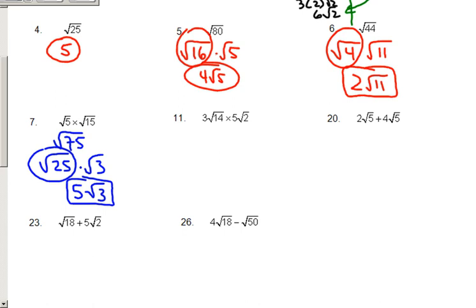Number 11, in this case, what I do is multiply the two numbers out front. 3 times 5 is 15. Then I go ahead and multiply the two roots together. Square root of 28.